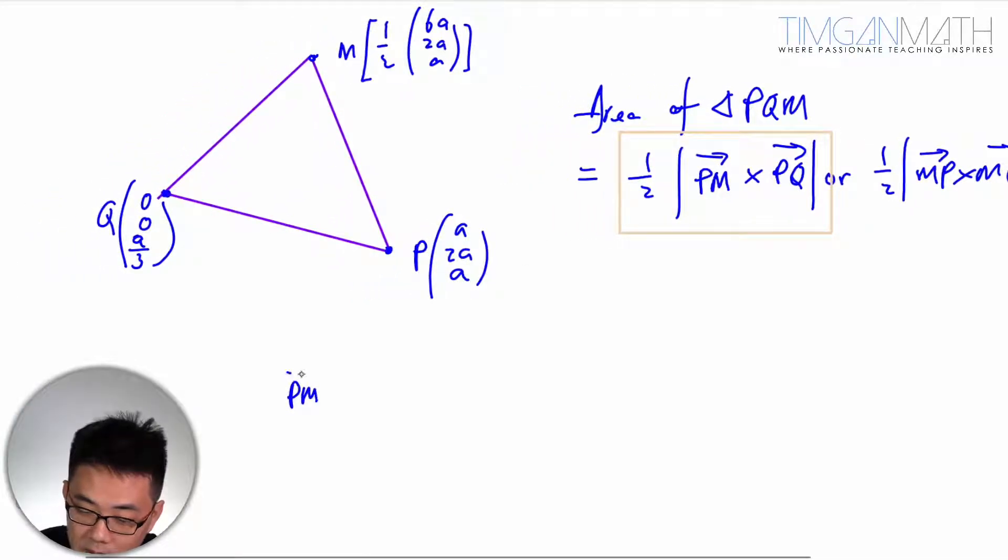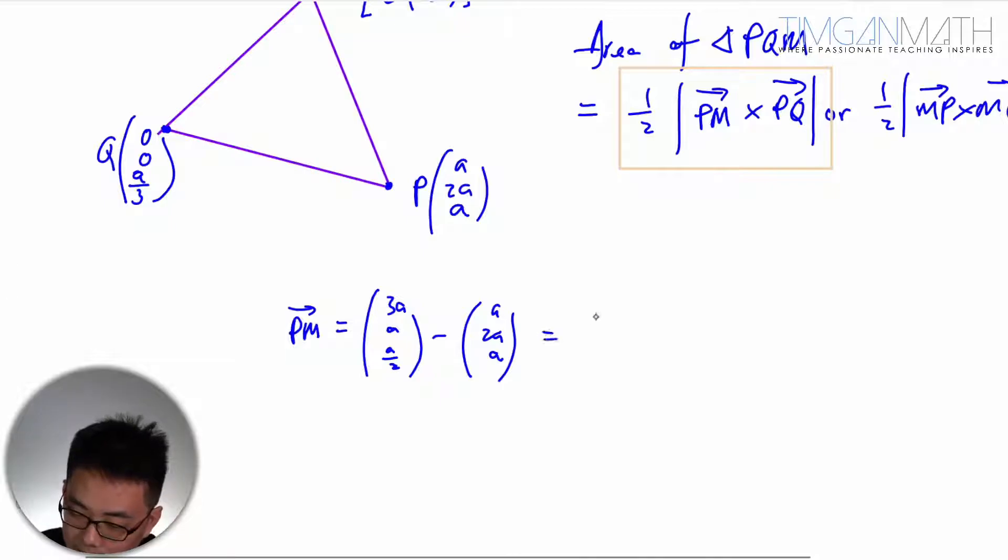So I'm going to find PM and PQ. PM, or just M minus P. So this would just be 3A and half A minus A, 2A. That will give us 2A, minus A, and minus half A, which we already found just now I believe.